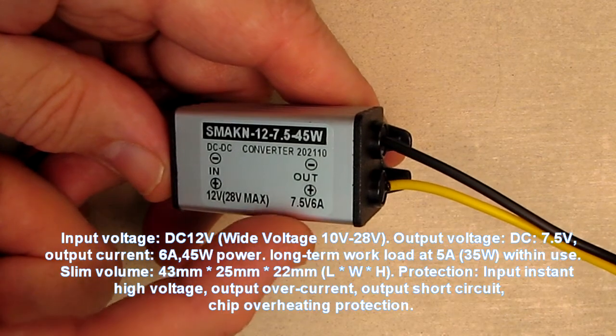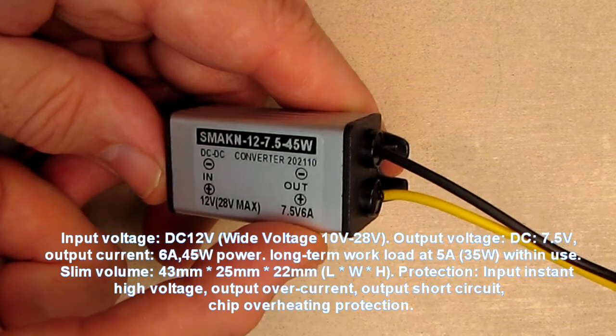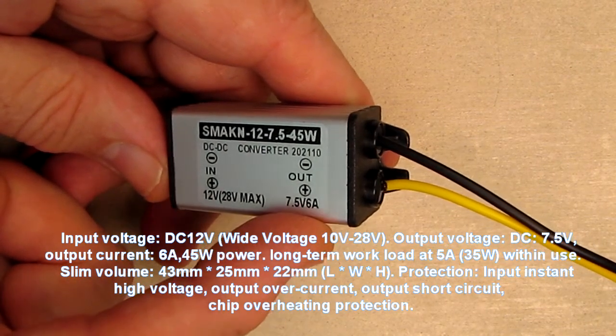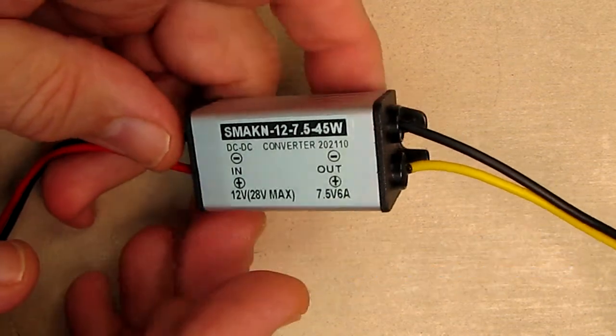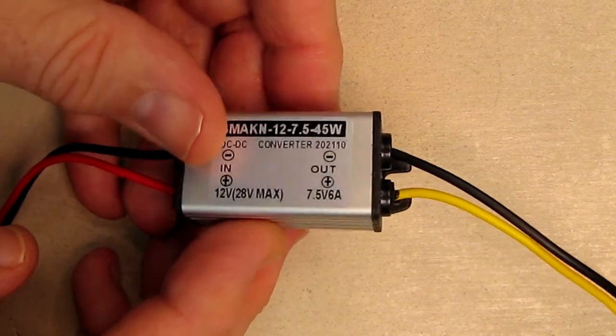The output is a steady 7.5 or 7.6 volts. I measured 7.6 volts and it's very well regulated. You can draw about six amps on there. You can notice this unit is all aluminum for heat sink capability.